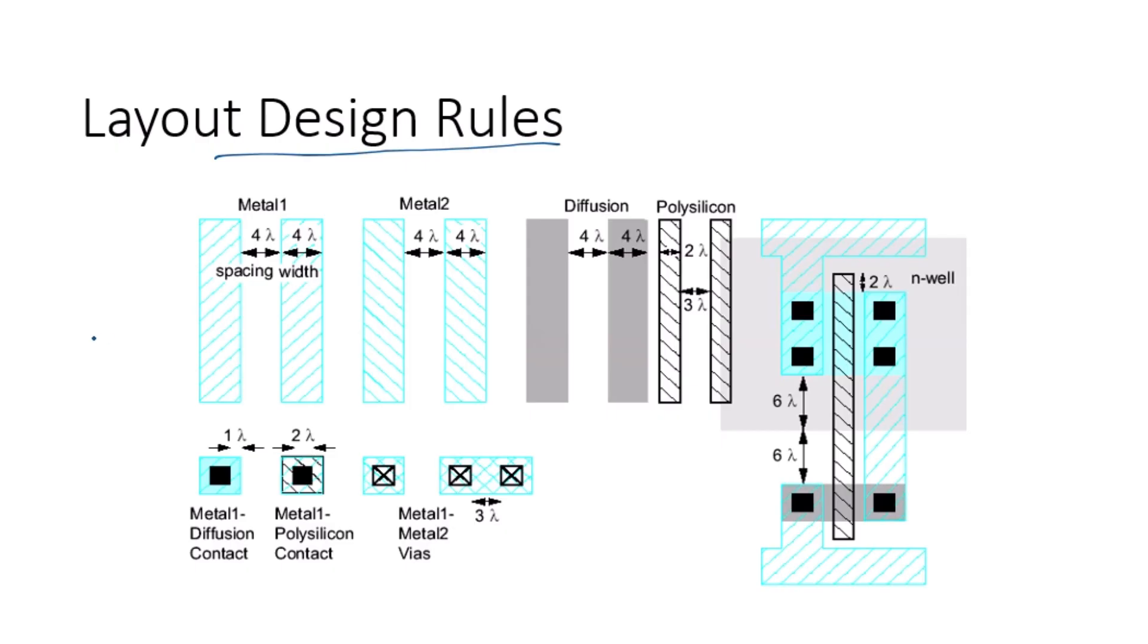Nonetheless, a conservative but easy-to-use lambda-based set of design rules for layouts with two metal layers is as follows. Metal 1, metal 2, and diffusion have a minimum width and spacing of 4 lambda. Metal 1 has a preferred routing direction of horizontal, whereas metal 2 has a preferred routing direction of vertical. Contacts are 2 lambda by 2 lambda and must be surrounded by 1 lambda on the layers above and below.